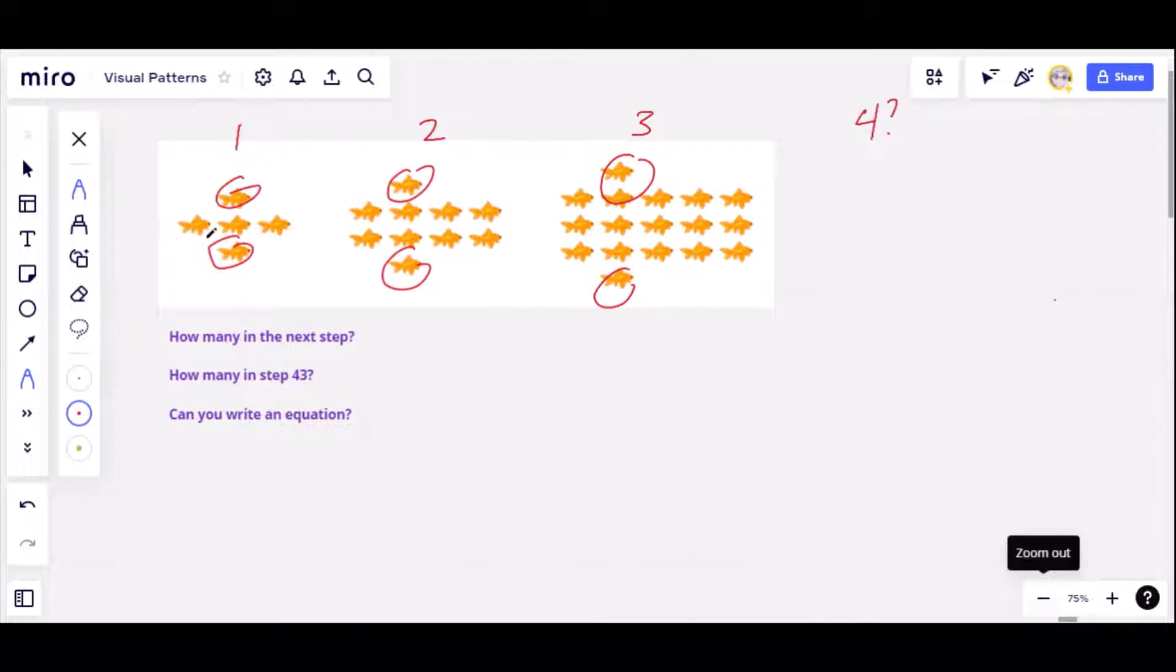So then if I look at what's left, I've got one row, two rows, three rows. So I'm thinking in step four, we'd have four rows, and then the two guys at the top and bottom.